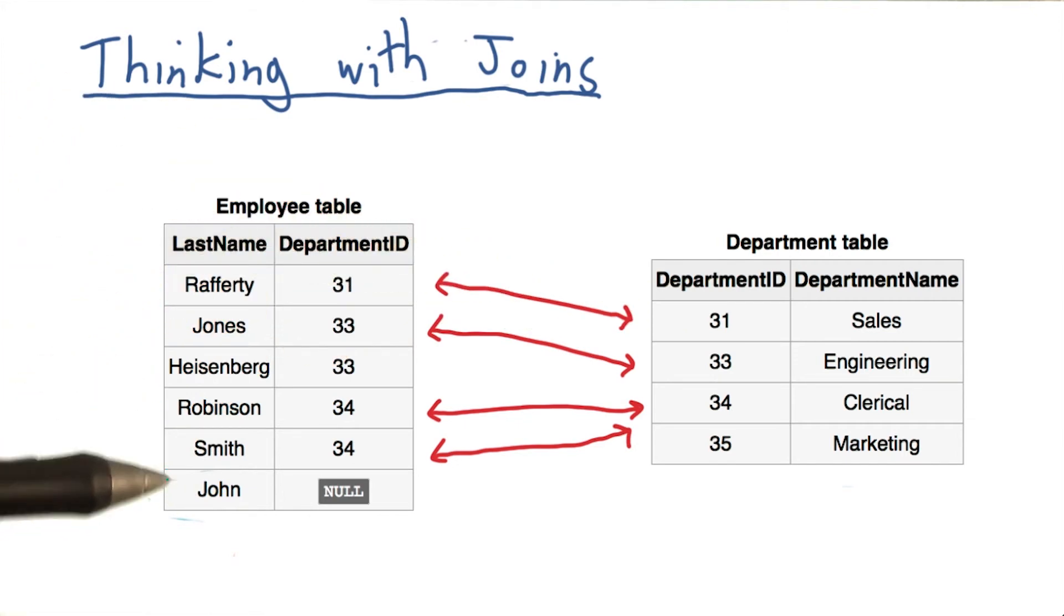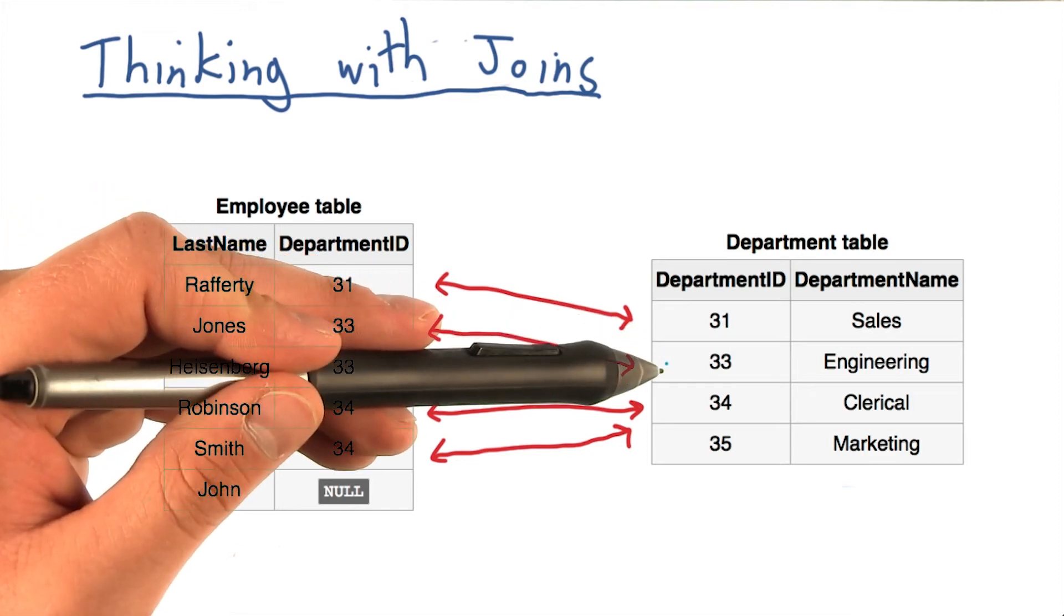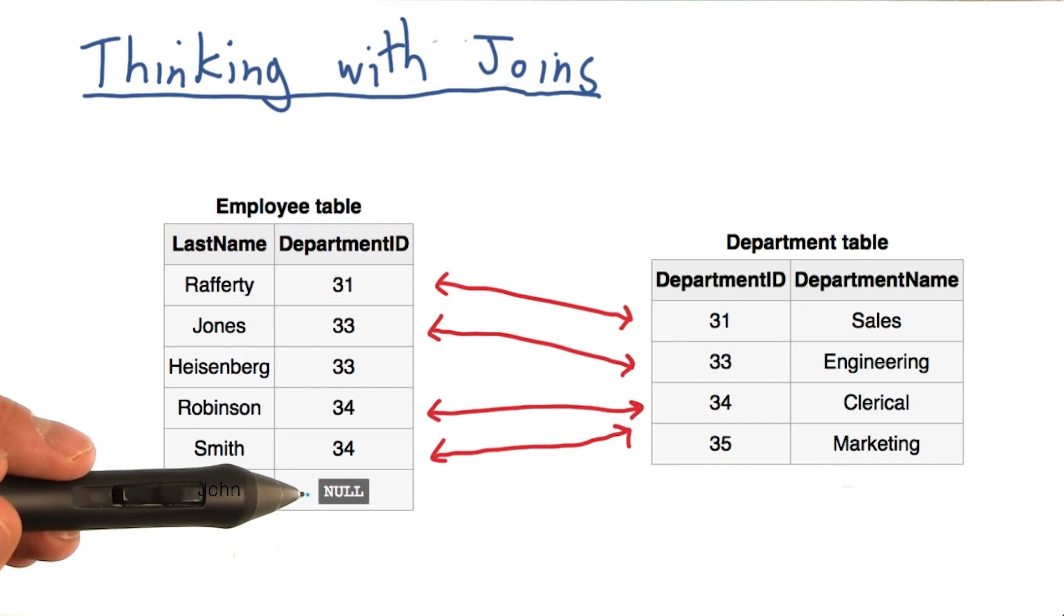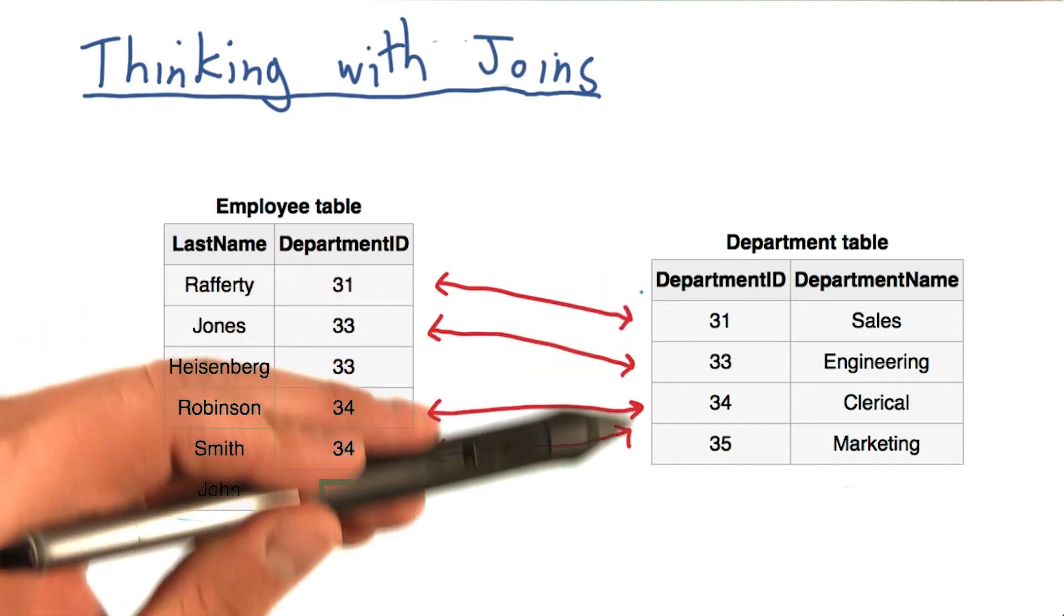One thing to notice is that two employees can be mapped to the same department. In this case, both Jones and Heisenberg belong to department 33. Or there could be no employees for a given department, in this case department 35. Or if an employee doesn't have a department, he can't get mapped to any.